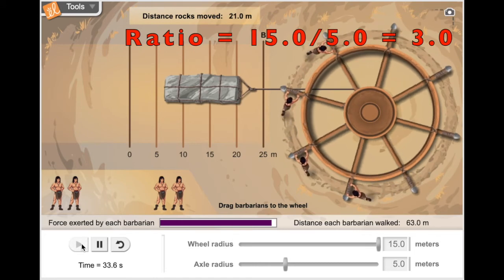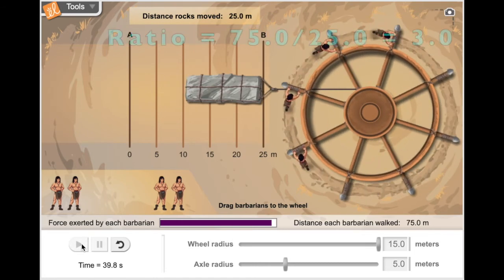Remember, the wheel-to-axle ratio is 3. Now each barbarian walked 75 meters, and the load only moved 25 meters. The mechanical advantage of this wheel and axle is 3. That means it multiplies the barbarian's force by 3, but they have to walk 3 times the distance.